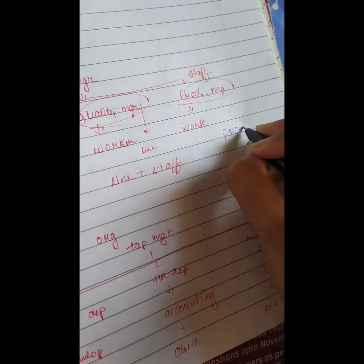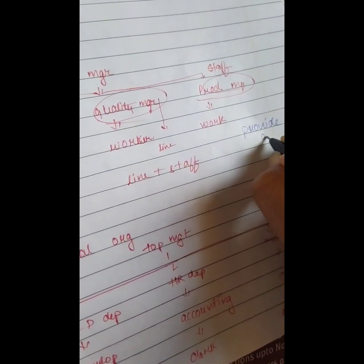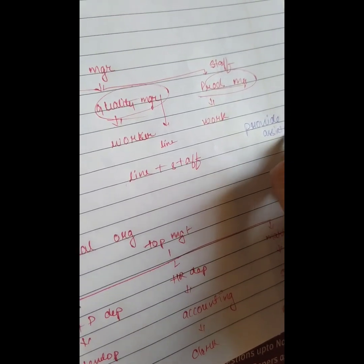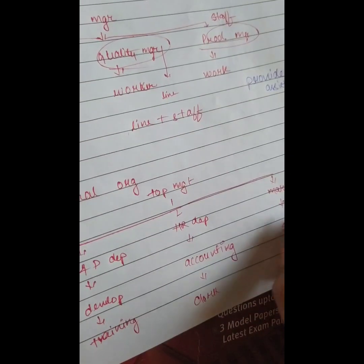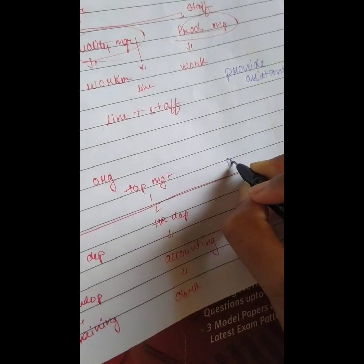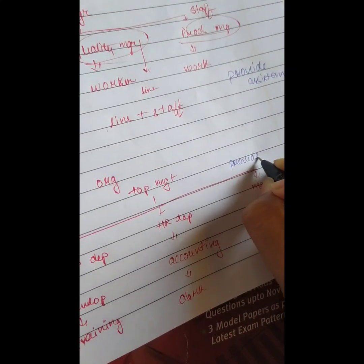In functional organization, the staff line provides advisory assistance. They provide an advisory function to the line staff and functional members. The functional members, however, provide command authority and are also responsible.